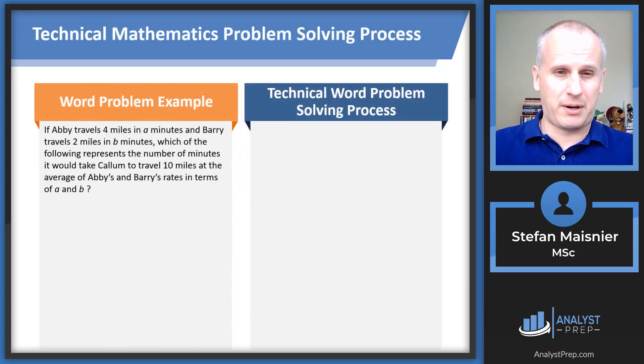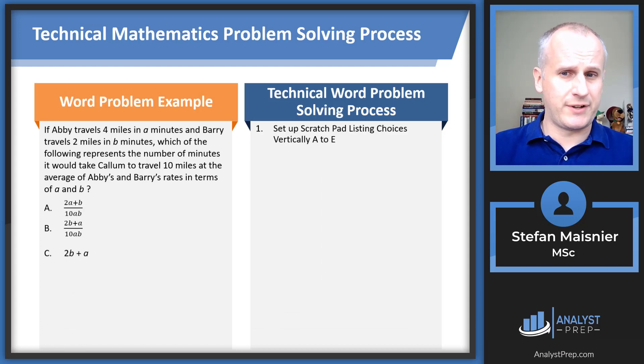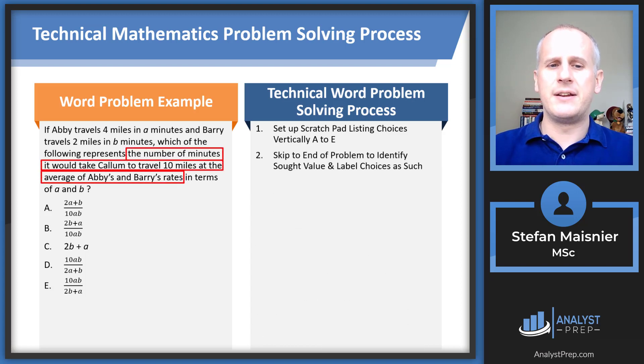Now, let's start with just a word problem example. As always, we're going to set up the scratch pad. We've got our choices. We'd write these out vertically A through E, but you're probably not going to write out the expressions themselves. That's going to be a little too time-consuming. Then, of course, you want to skip to the end of the problem, identify what you're being asked for, and we'd label the choices as such.